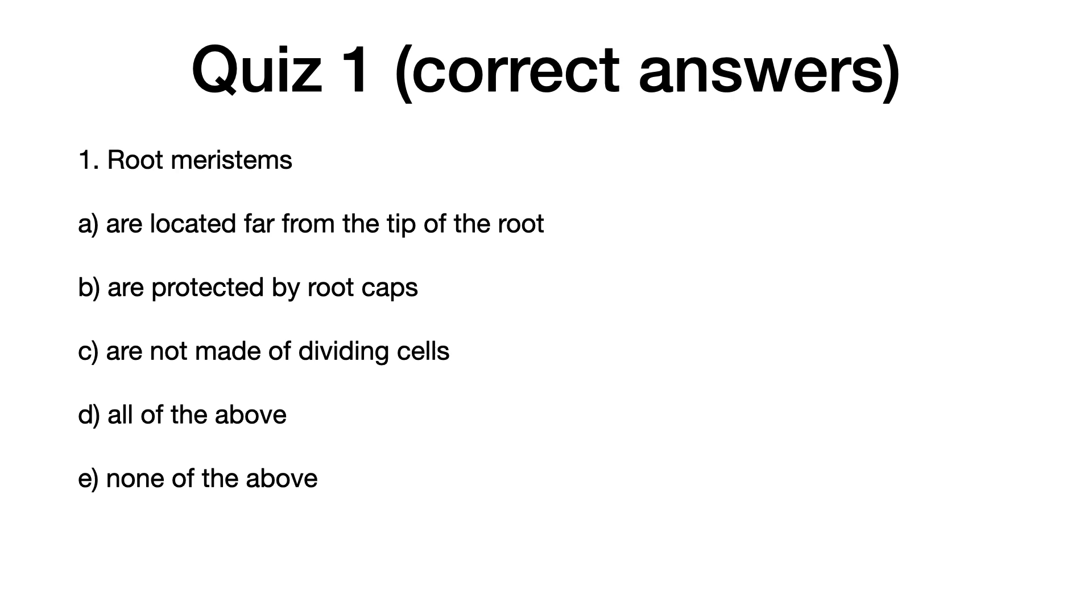Question one: Root meristems. A: are located far from the tip of the root. B: are protected by root caps. C: are not made of dividing cells. D: all of the above. E: none of the above. The correct answer is B, are protected by root caps.